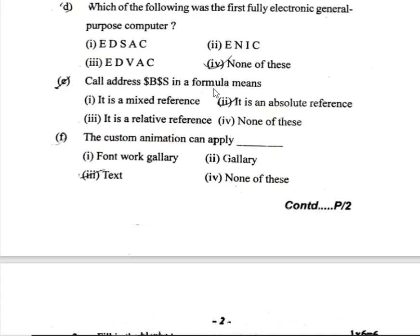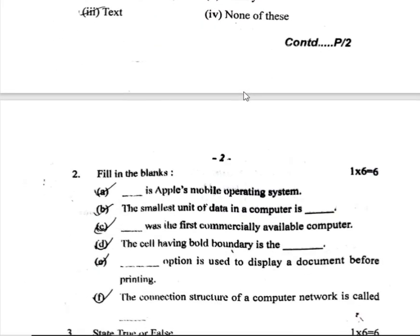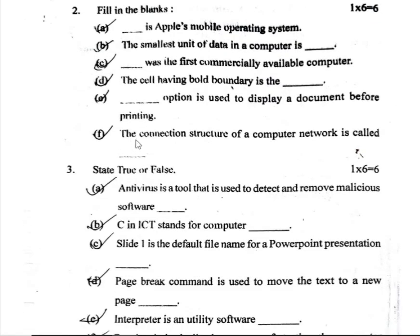Next question: call address in a formula means what. The custom animation can be applied where. Then fill in the blanks, one to six marks. The smallest unit of data in a computer is what. In ICT, the standard for computer is what.